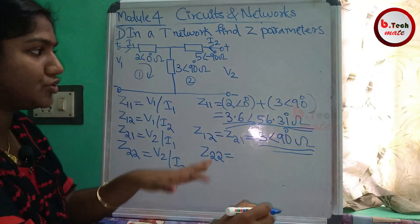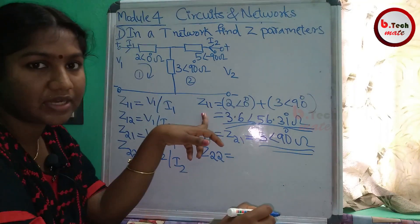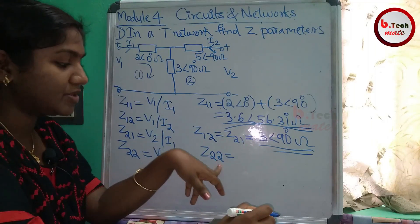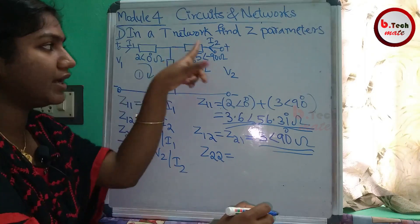Now the last one is Z22. If we use Z22, that is the formula. That is the same procedure. Now Z22 comes in the second mesh. We need to get the impedances.